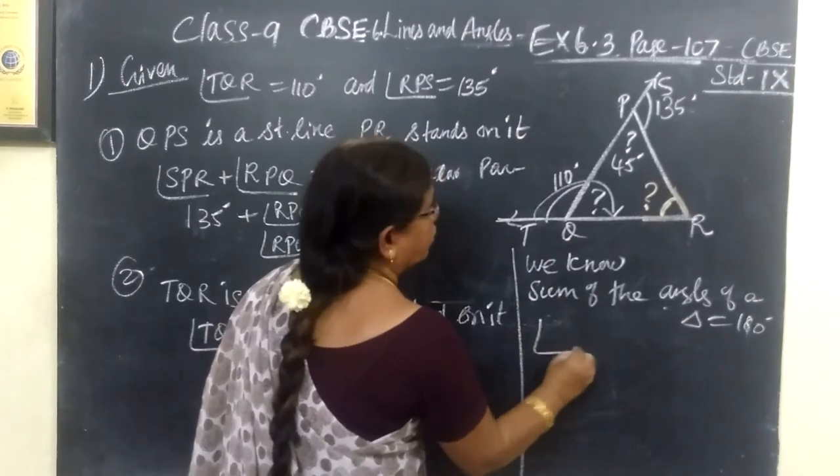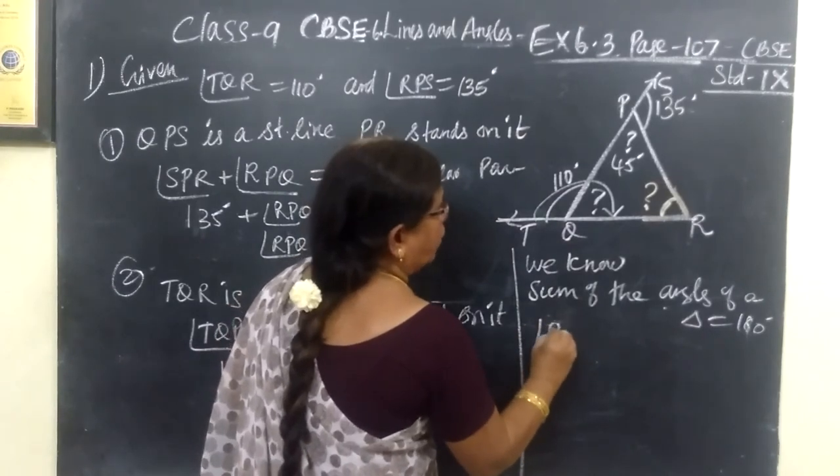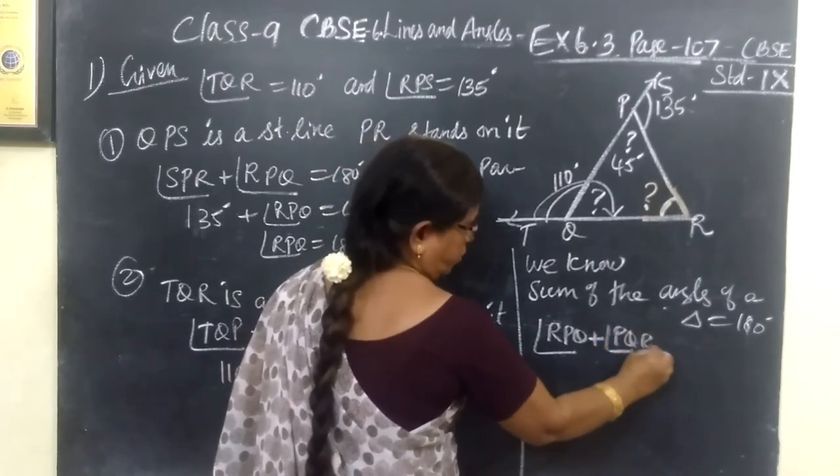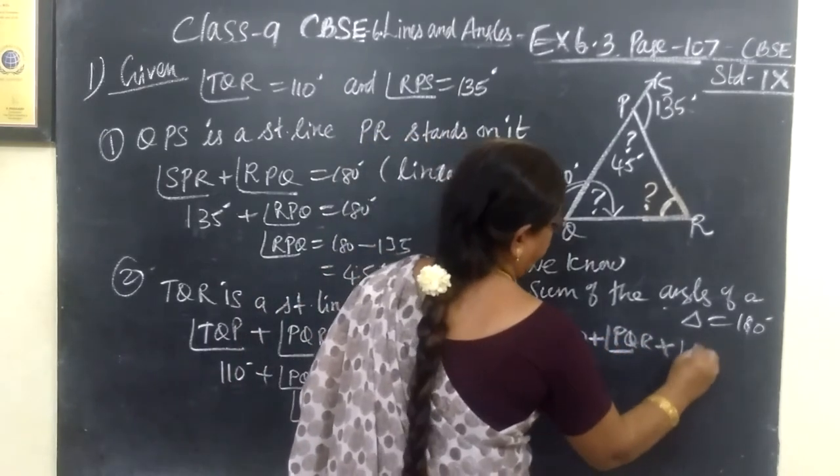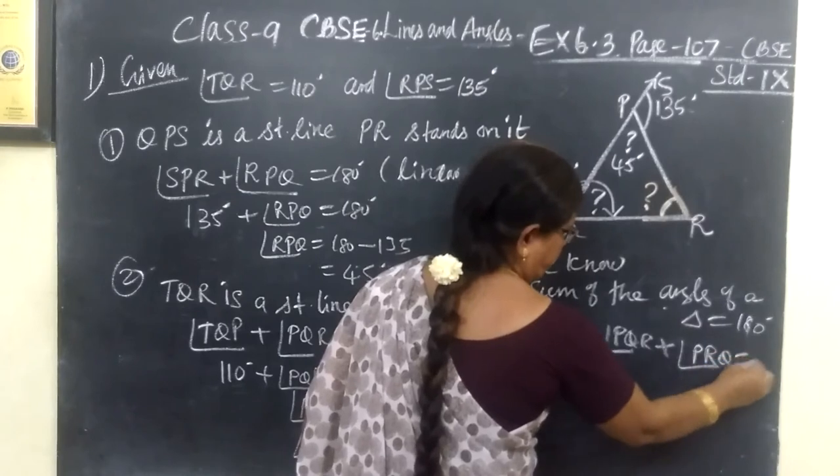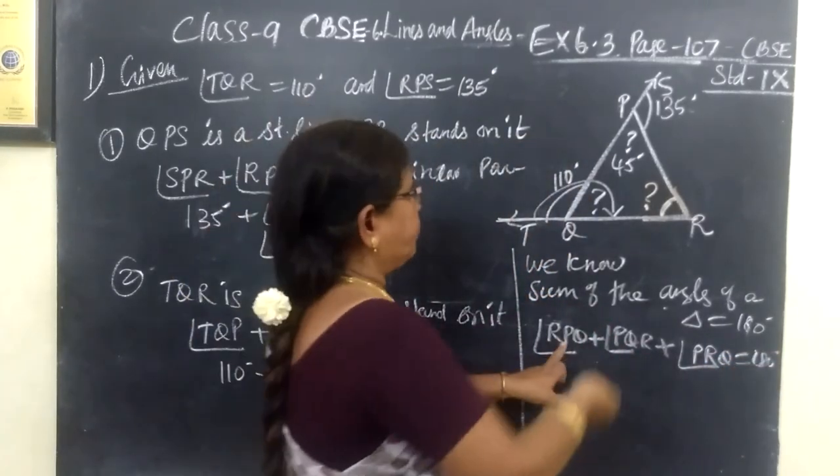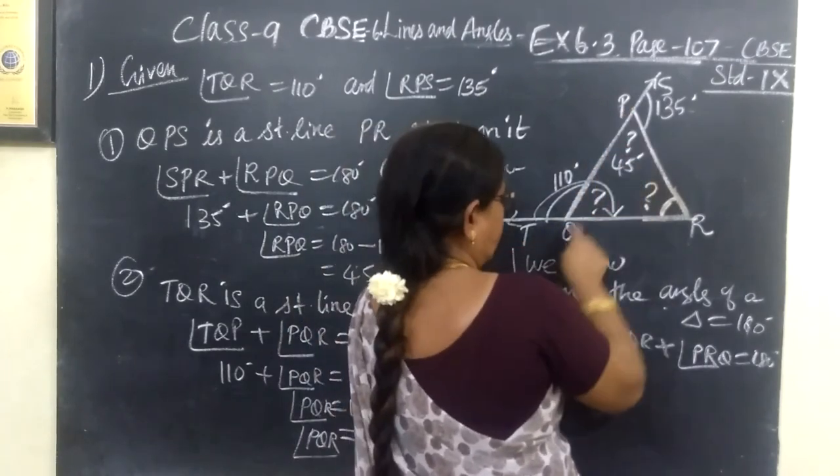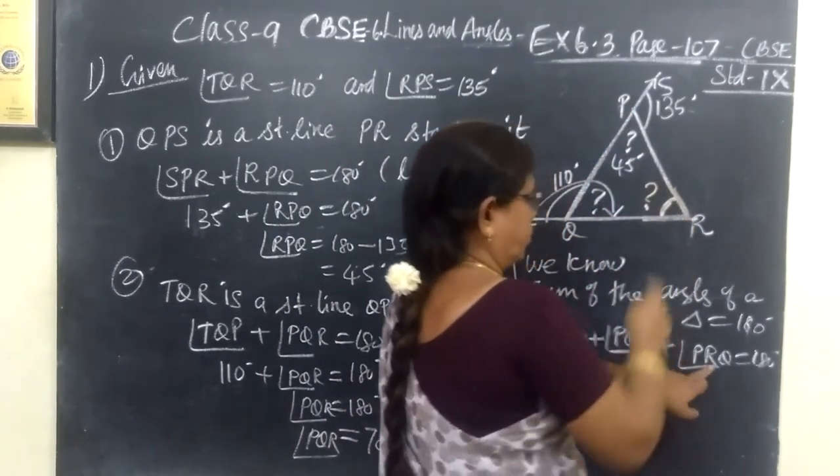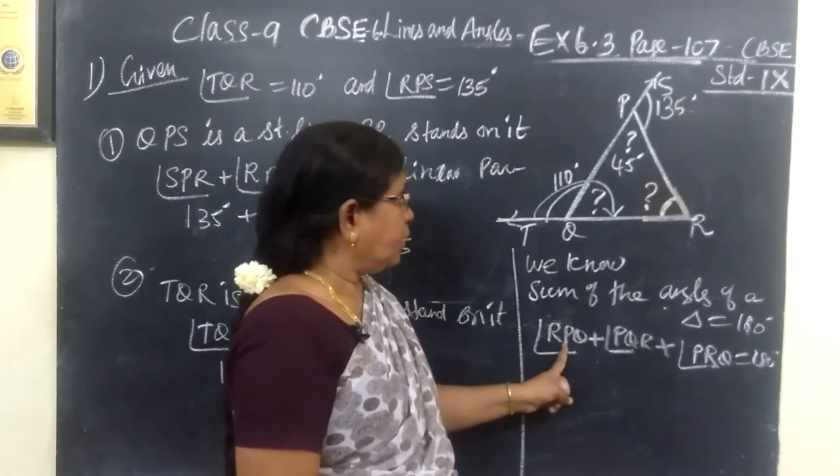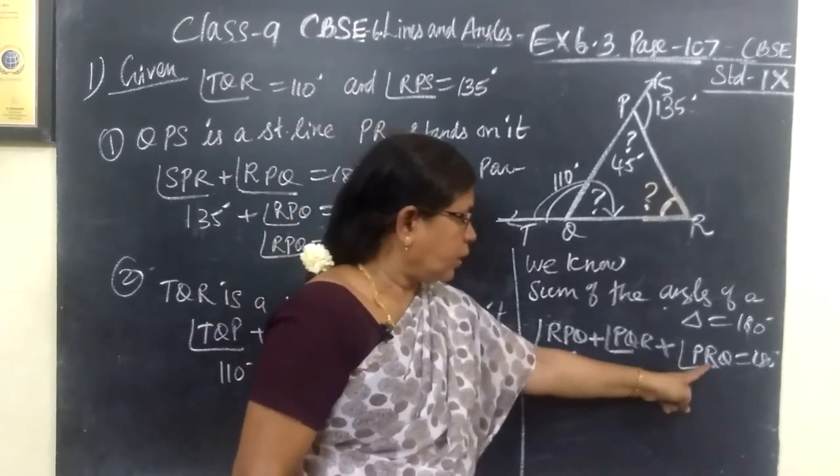Therefore, RPQ plus PQR plus PRQ equal to 180 degrees. Here P, then Q, then R. You see the middle letter. Middle letter P gets Q and R.